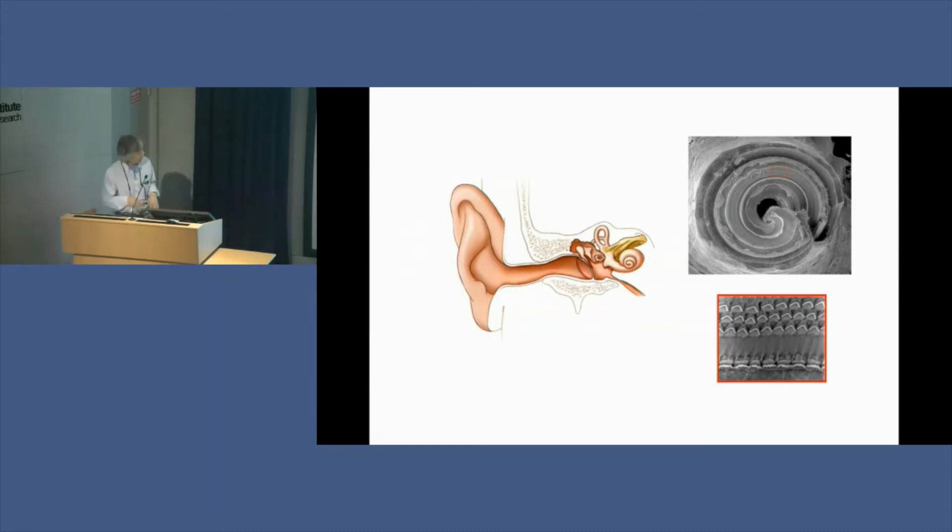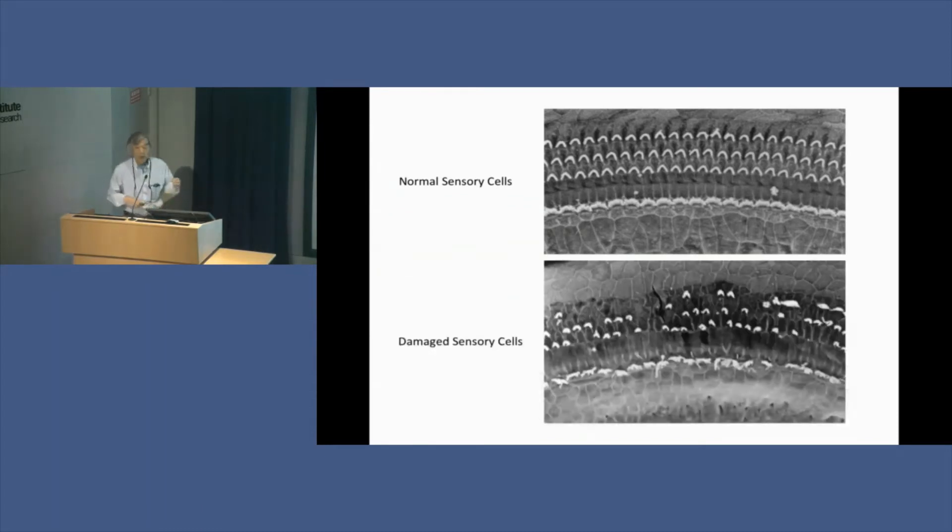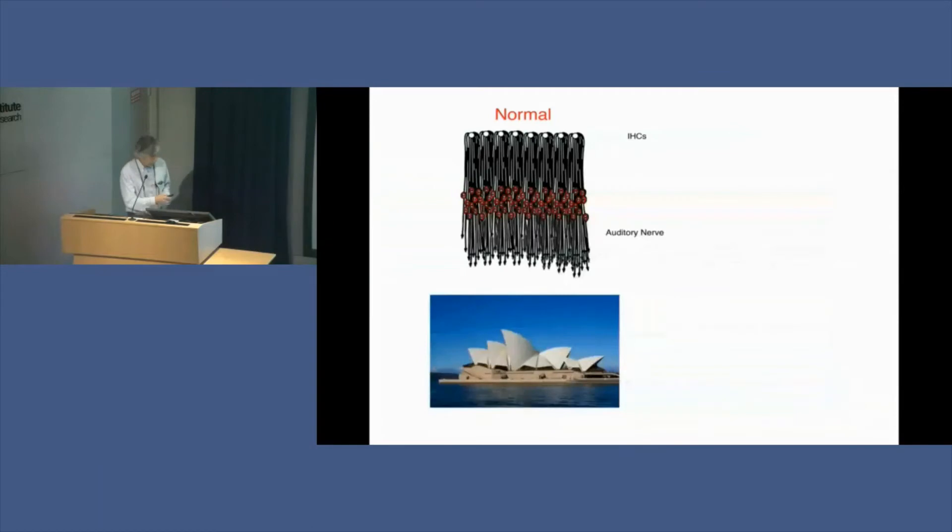If we look at a normal hearing ear, you have really nice intact rows of the hair cells—the sensory receptors—about 4,000 in each row. But with hearing loss, you can see the hair cells are damaged. This is damaged by excessive exposure to noise.